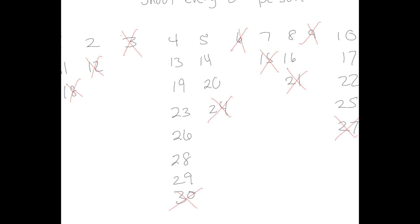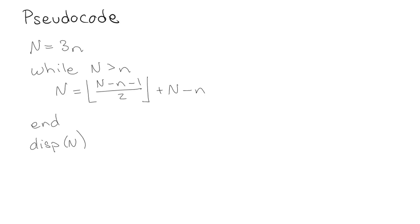We went through all that logic and came up with some pseudocode to figure out: if they're shooting every third person and there are n people, where would you want to stand? The Josephus problem shooting every second person has already been solved, so we're doing something different. Looking at the pseudocode is going to help us simplify further and then generalize it to shooting every Q-th person instead of every third.